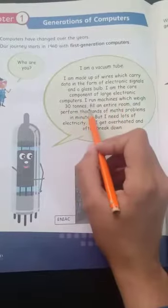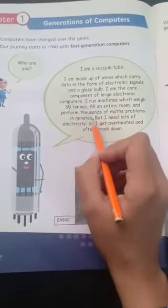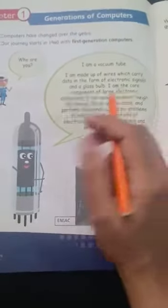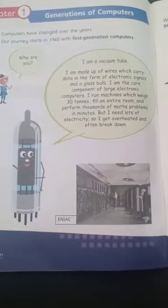I run machines which weigh 30 tons, fill an entire room, and perform thousands of math problems in minutes. These machines using vacuum tubes weigh 30 tons, which is a lot of weight. They cover the entire room and perform operations within minutes, which means their speed is fast.